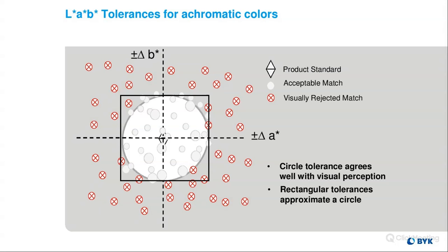With LAB tolerancing, we have a very simple box tolerance — this is the delta E star equation, the first equation we'll go through. In the middle, this diamond shape is our standard. All of the white circles within that box are acceptable matches — visually accepting. All of the red X circles are visually rejected color matches. We don't want to pass any of the Xs, but we want to pass all of the circles. When we look at an achromatic color, we find that our visually accepted matches fall perfectly within this LAB box tolerance — it matches perfectly to our visual perception.